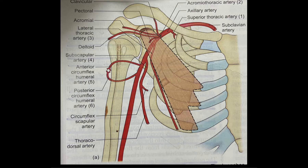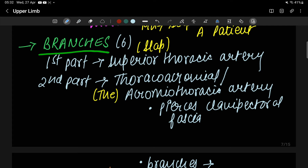Here in this diagram, the brownish pectoralis minor muscle is dividing the axillary artery into three parts. This is the first part — the proximal part. Below this, deep under it, is the second part — the deep or posterior part. Then this one is the third part, or distal part of the axillary artery.